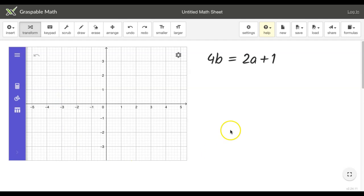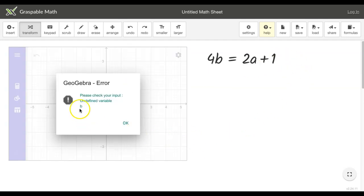And over here I have my GeoGebra component. And if I try to plot this directly here, GeoGebra will tell me, well, I don't know what this b is supposed to be.